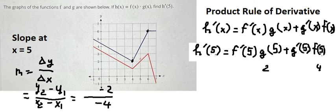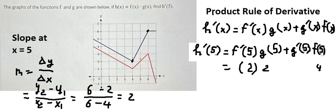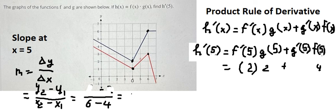Now we select this next point, so we have x equals 6. We calculate and we get f prime of 5 equals 2. Now we do the same for g prime of 5 — I select this point and this point, because 5 is between 4 and 6. At x equals 4 we have y equals 1, and at x equals 6 we have y equals 3. We calculate and get g prime of 5 equals 1. So we put 1 in here.